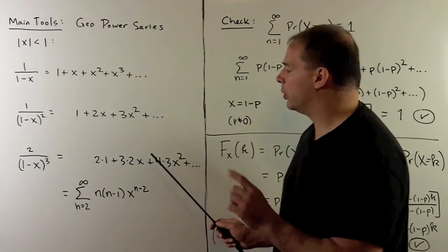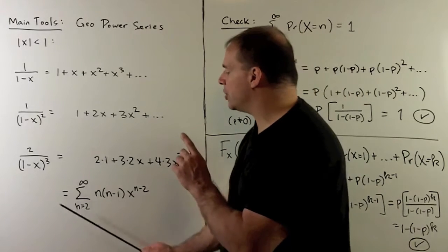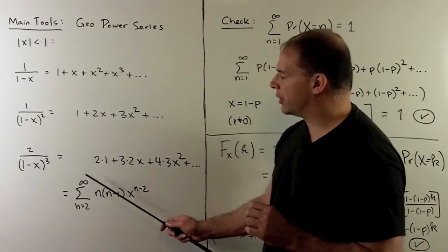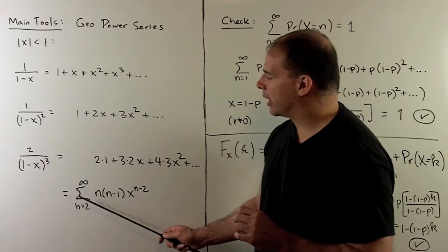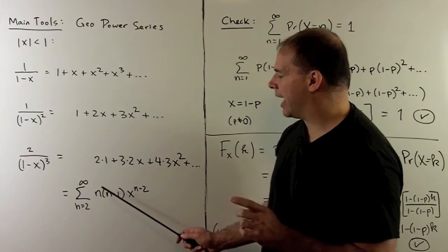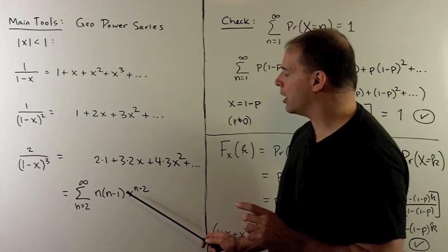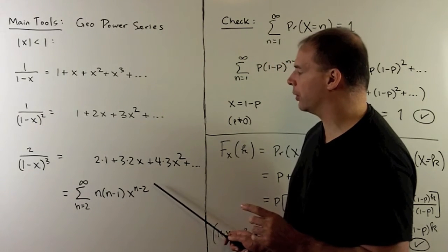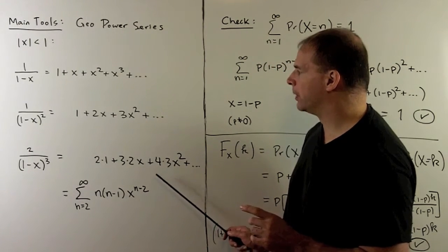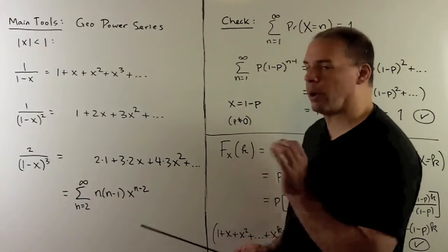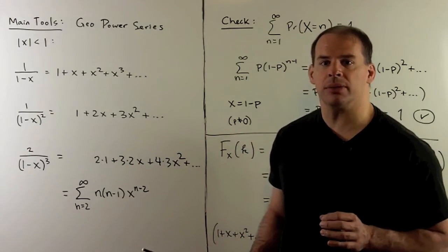We can write that in summation notation as a series going from N equals 2 to infinity of N(N minus 1) times X to the N minus 2. We'll need these three identities in what follows.